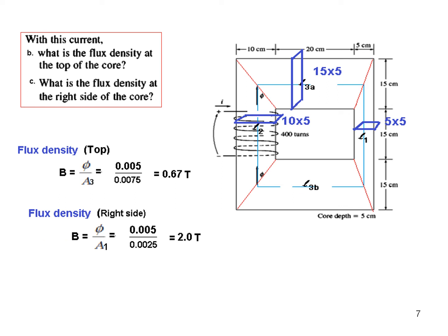And similarly for the right, the flux is same, the area changes. Area is now here 5 × 5 which is 0.0025, so dividing we get the flux density to be 2 tesla. So I hope this you can follow and you can solve this type of a question.